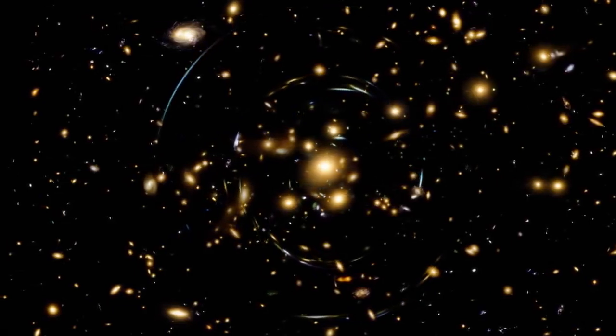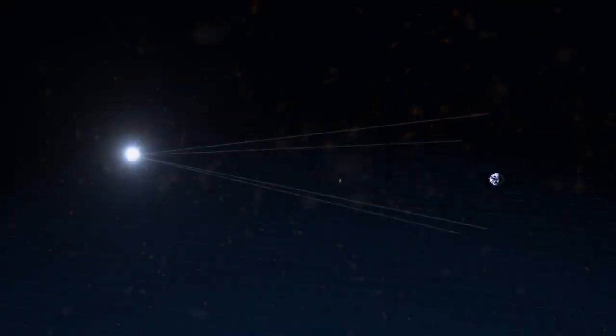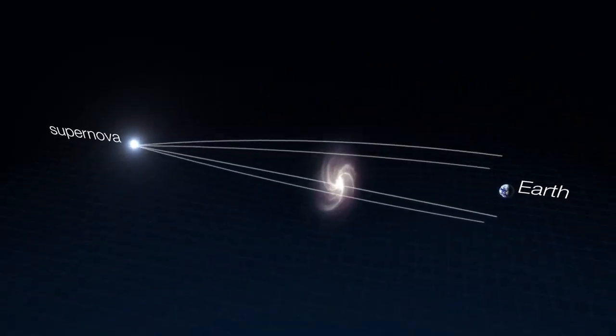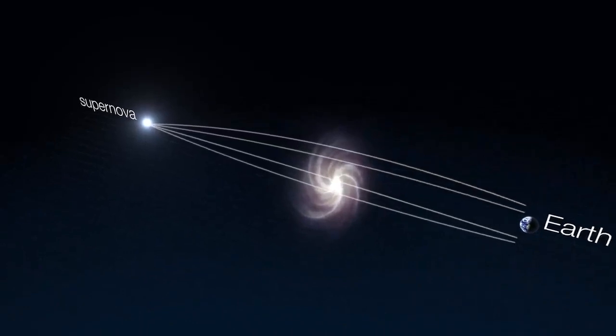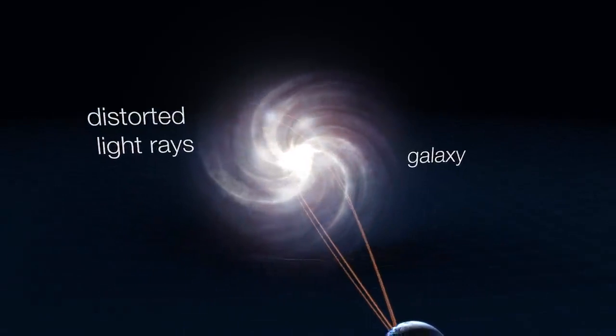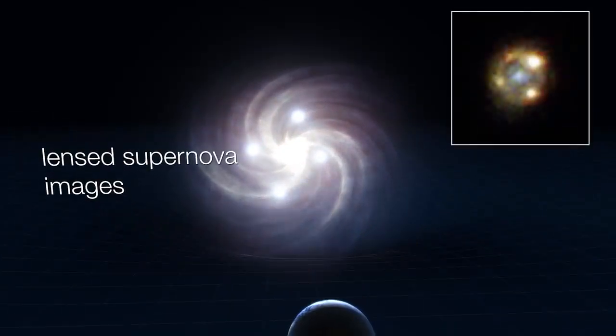Gravitational lensing is a phenomenon created by extremely concentrated masses, like the cores of galaxies or galaxy clusters. Their strong gravity warps the surrounding space, and light from distant objects travelling through that warped space is curved away from its straight-line path as if passing through a lens.